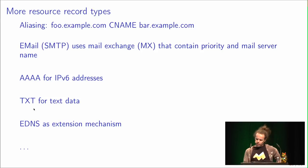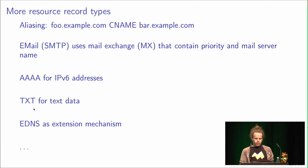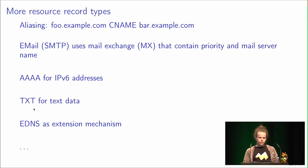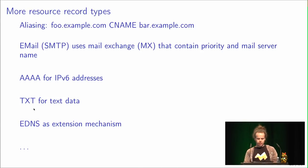EDNS is an extension mechanism for DNS that uses resource record types for in-protocol extensibility — pretty interesting and nice. Since DNS is 30 years old, any extensions must be backwards compatible given the huge deployed server and resolver base. EDNS was developed some time ago, but there's an upcoming DNS flag day to require that servers behave well when EDNS records are requested by the client.